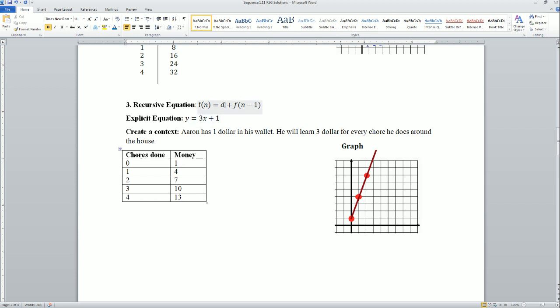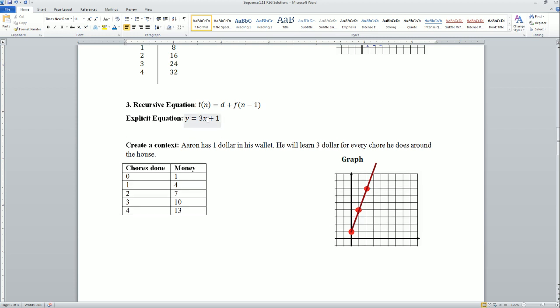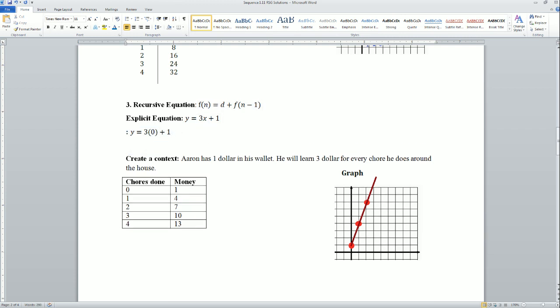If I plug in zero for X, what is my Y? It looks like my Y would be equal to three plus zero is zero, so it should be one. Do you see that? Zero, and Y is equal to one. Let's see, I plug in one—three times one is three plus one, so three times one is three plus one is equal to four.